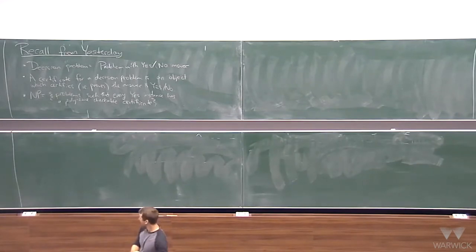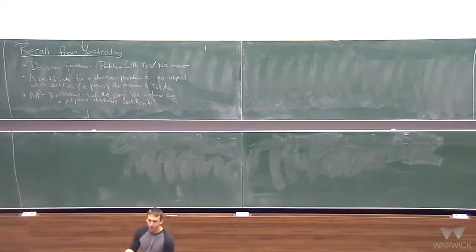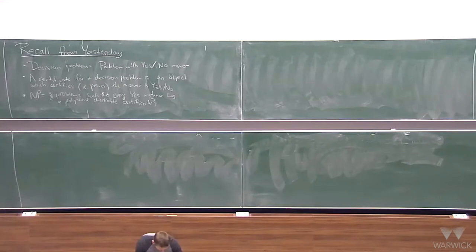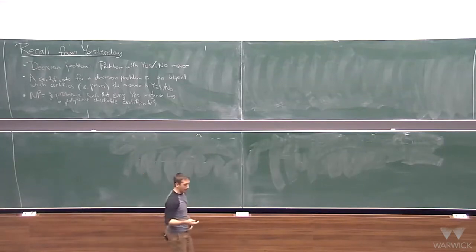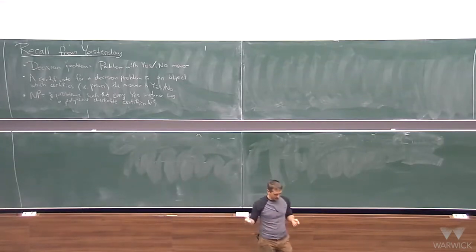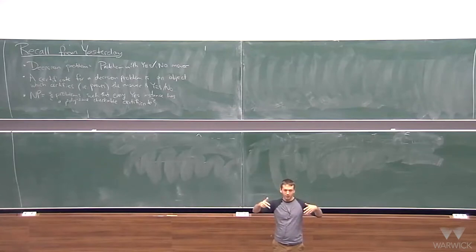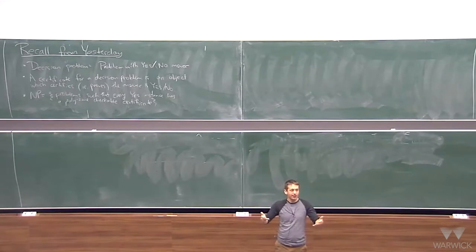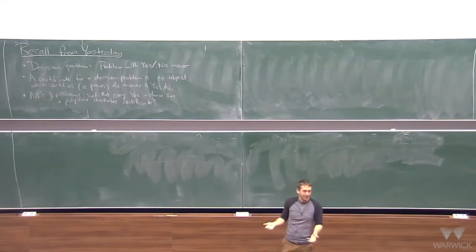A certificate for a decision problem is something which proves the answer is yes or no. For an input where the answer is yes, the certificate proves it's yes. For example, if the question is: is there a flow of value at least 100? Then a certificate would literally be a flow of value 100.